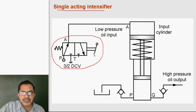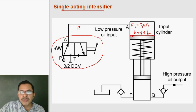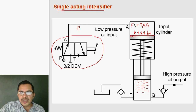When the lever of the 3 by 2 direction control valve is kept in the first position, oil flows to the input cylinder — that is the P to A connection. Oil from the pump flows to the large input cylinder and exerts pressure on the piston of the big cylinder. The force exerted is P1 multiplied by A1, the area of the piston of the large cylinder. That force P1·A1 is then exerted by the small piston on the oil in the small cylinder.